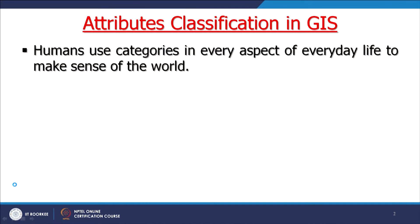In classification, when we are having continuous data, sometimes it is difficult to make sense out of continuous data. Our brain, or humans, are more comfortable to use data in different categories — in different classes. Therefore, when we are having continuous data, sometimes we have to do a sort of discretization.